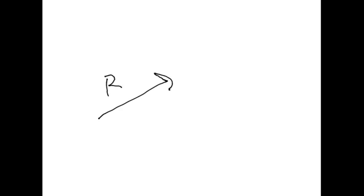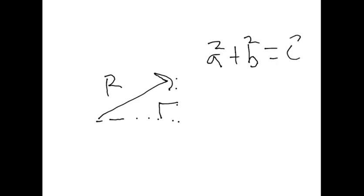If you look at it, with the resultant vector, horizontal, and vertical components, you can see that we have a right triangle. If you really want to, you can use the Pythagorean theorem — a squared plus b squared equals c squared — to find a resultant vector or to find some of the components. I'm not going to talk about that in this video, but it's important to mention.